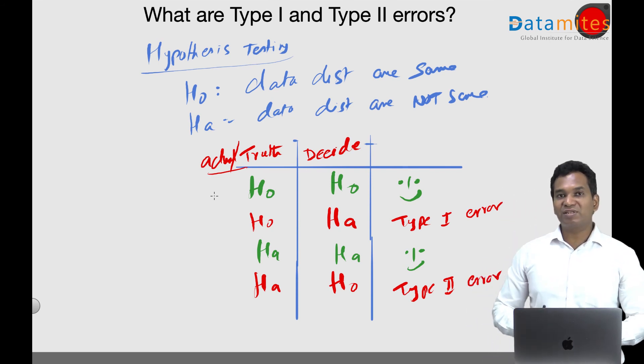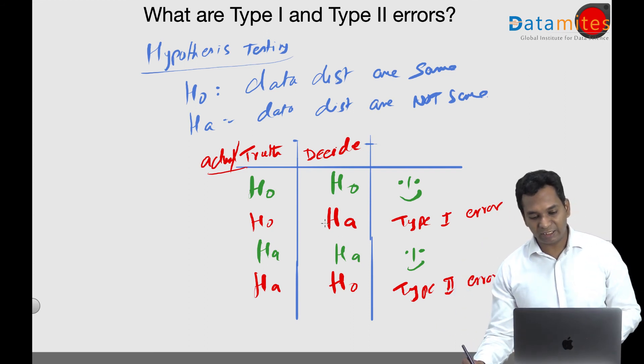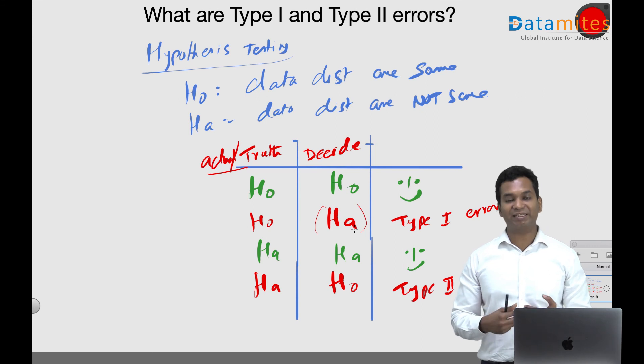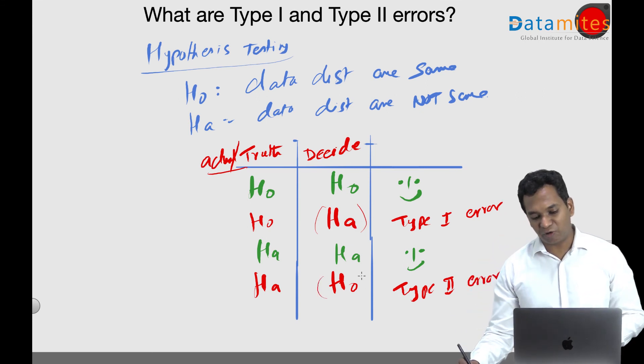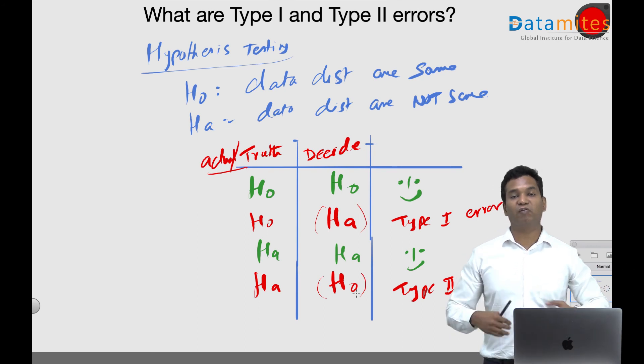So when someone says Type 1 error, it simply means that you have wrongly concluded alternate hypothesis, simple as that. When someone says Type 2 error, it simply means that you have wrongly concluded null hypothesis, which means the actual is alternate and you have wrongly concluded as null hypothesis.